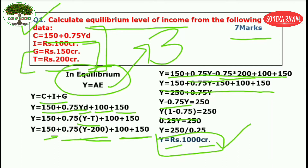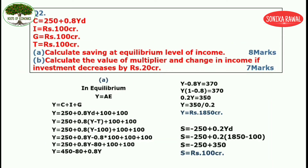Moving to question number two. Again you are given consumption, investment, government expenditure and taxes — that means again a three sector economy model. You have two parts: part A and part B. Part A is eight marks and part B is seven marks, making a total of fifteen marks. Students, you can easily secure ten out of fifteen marks.